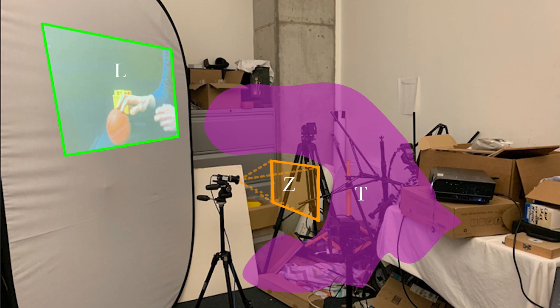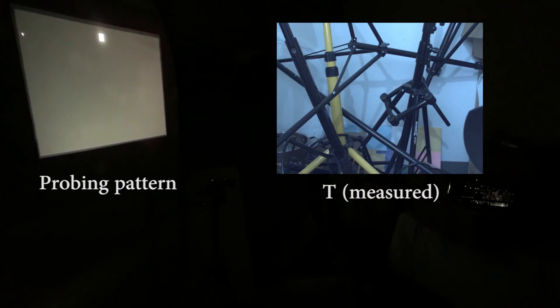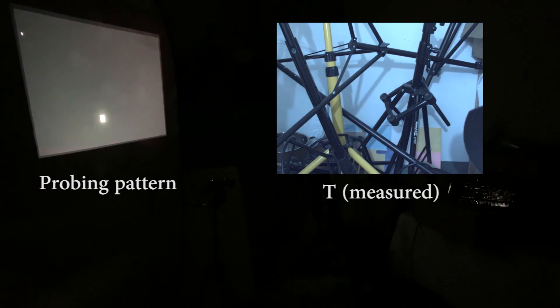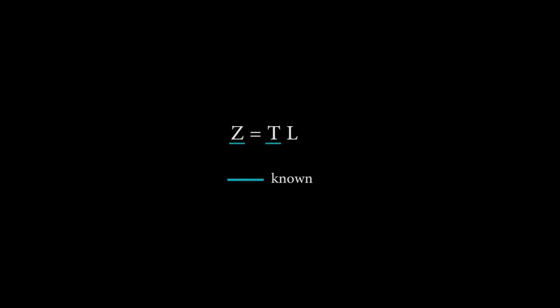As a warm-up, we present a non-blind light transport inversion where, in addition to the observed video, we measure the light transport tensor T beforehand by projecting a series of impulses on the projector and recording the responses on the clutter. With this measurement, we now know two out of three unknowns and so we can easily solve for the hidden video.